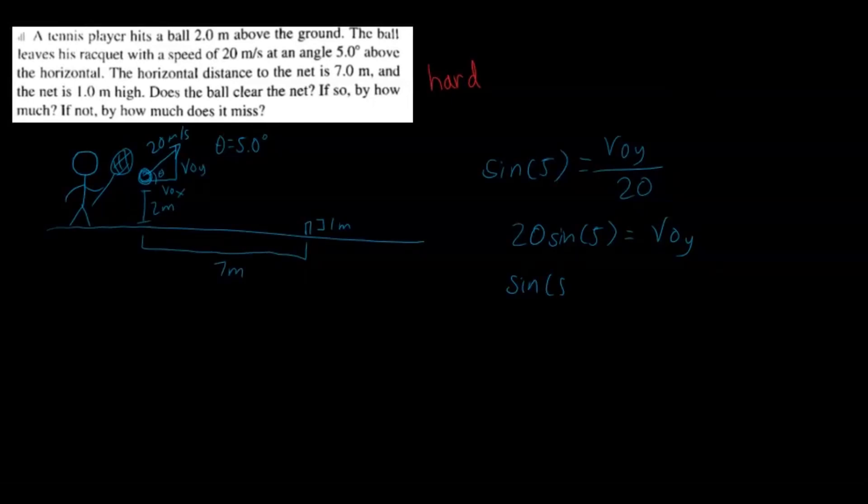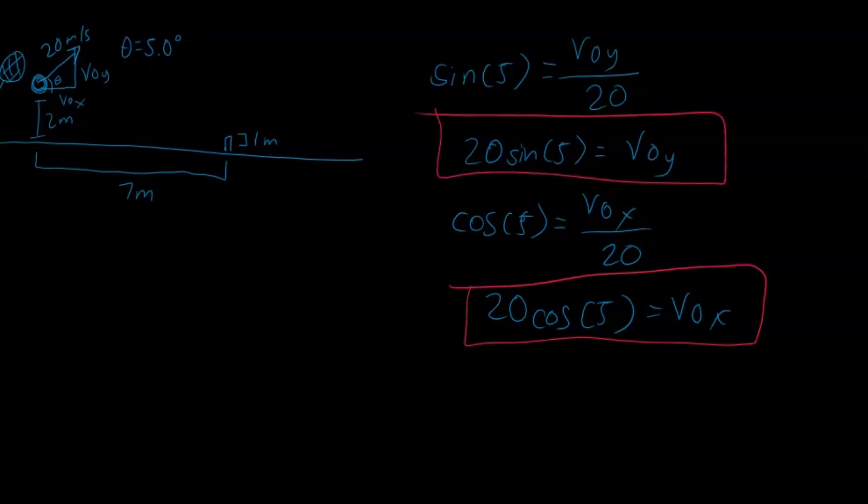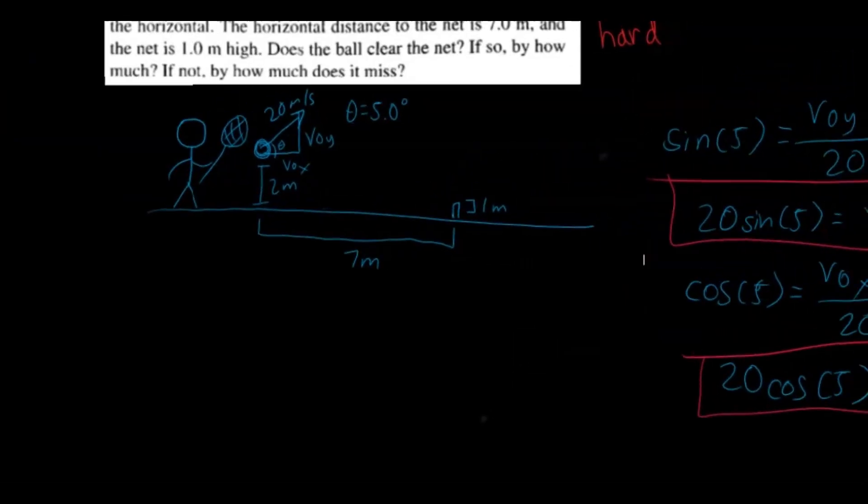And we can do the same thing with trig for the x direction. So we have cosine 5 equals initial velocity in the x over 20. And we can do the same thing here. 20 times cosine 5 is equivalent to the initial velocity in the x direction. So what I'm actually going to do is just box those in so we don't lose those.